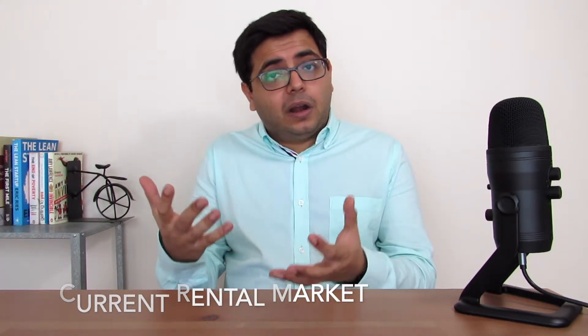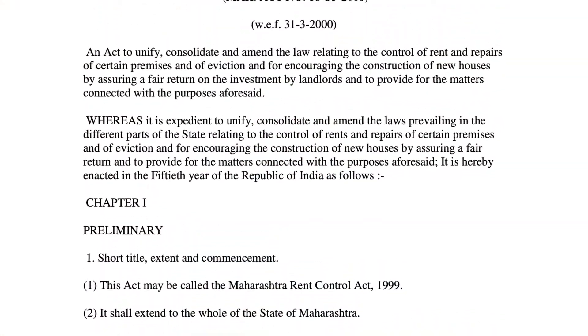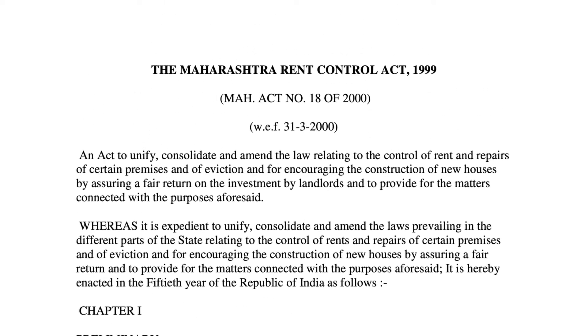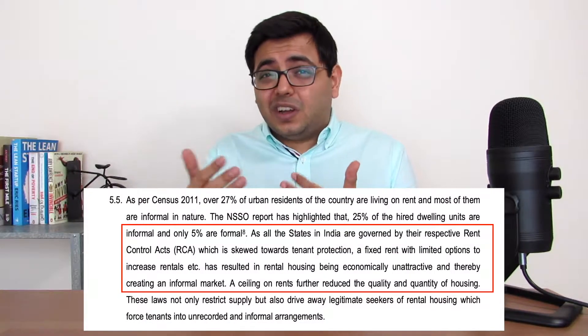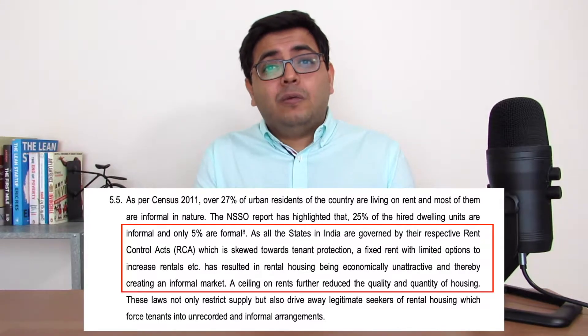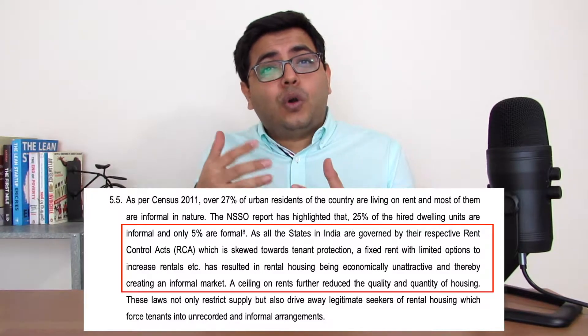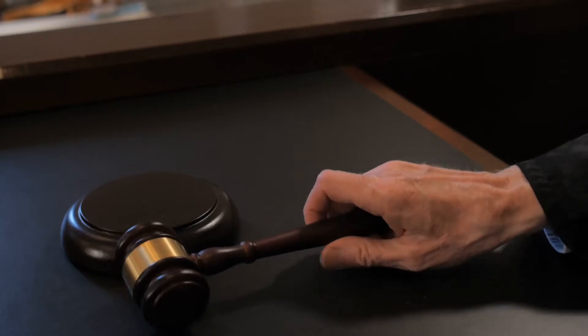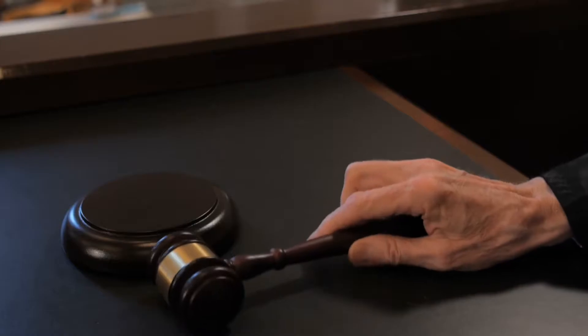When we talk about the existing state of rental markets being underdeveloped, this is also because there is no single uniform law governing rental activity across the country. A lot of states have their own version of the Rent Control Act that was first passed in 1948, and have made amendments to it since then. Even the National Urban Housing Policy of 2015 noted that the current laws discourage investment and are skewed towards tenants, with rent freezes in some cases or very limited scope for rent hikes, along with complicated conditions for things such as evictions — all of which has led to disputes and long legal battles between landlords and tenants over the years.